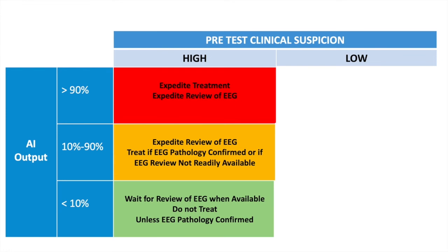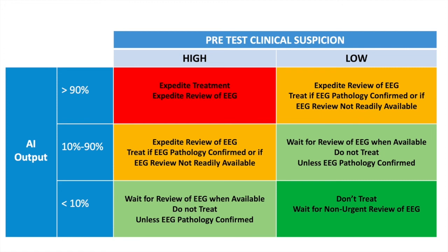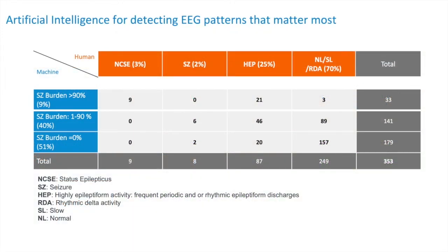If the suspicion is very high and the AI output is definitely less than 10%, we should wait and not treat the patient until the EEG pathology is confirmed. This is where we can save the hospital from unnecessary treatments and unnecessary ICU admissions. If the suspicion is very low, we guide treatment based on AI output — if the AI output is less than 10%, definitely don't treat and wait for non-urgent review of EEG the next day. Overall, yes, there will be many over-calls, but intentionally this algorithm has been designed to be more sensitive than specific, because we want to capture those nine cases by all means.